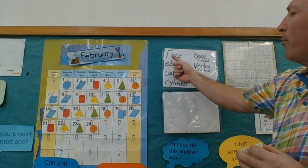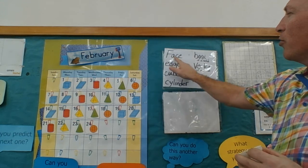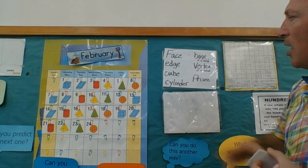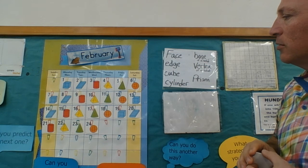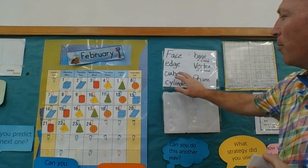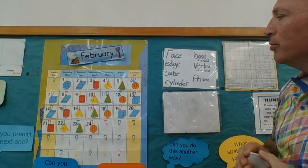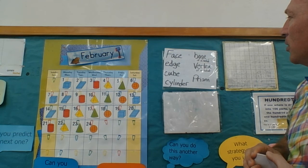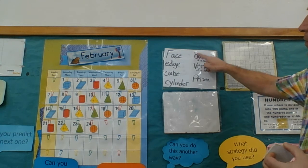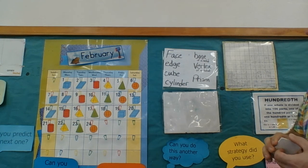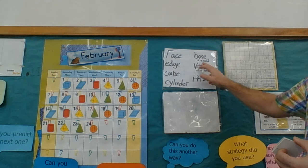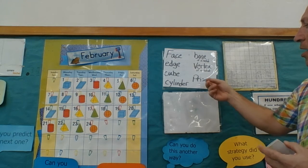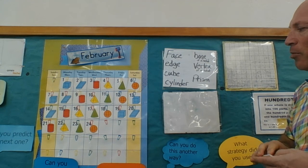Can you see how many of these figures have a face on them? How many have an edge? How many are cubes? How many are cylinders? How many of these have a base of a solid? How many of them have a vertex? And how about a prism?